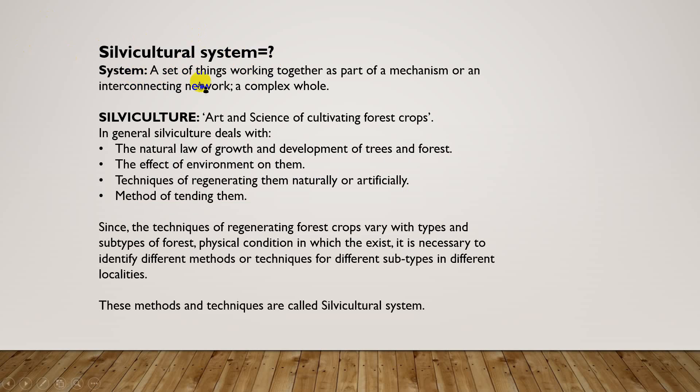A set of things working together as part of a mechanism or an interconnecting network is a complex whole — that is a system. Silviculture is the art and science of cultivating forest crops. In general, silviculture deals with the natural laws of growth and development of trees and forests.